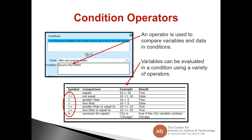Condition operators — an operator is used to compare variables and data in conditions. Variables can be evaluated with a variety of operators: equals, not equal, greater than, less than, greater than or equal to, less than or equal to, and 'is' (which is the same as equals). This cheat sheet is also in our authoring guide. A tip from elementary school: to remember greater than or less than, the mouth of the alligator is always eating the bigger number.